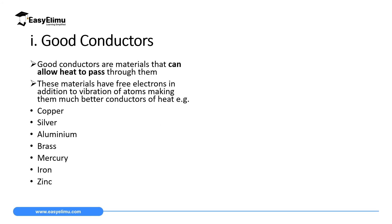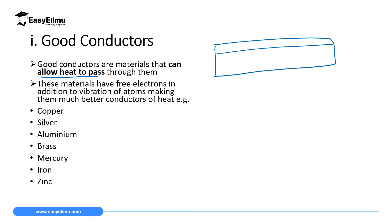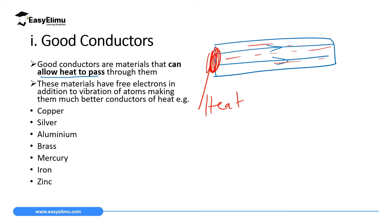We define good conductors as materials that allow heat to pass through them. If you introduce heat at one point on a material and it allows the heat to move to the other end, then that material is a good conductor. Most metals fall under good conductors.